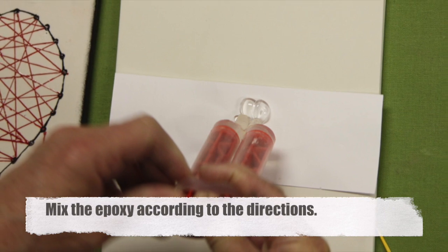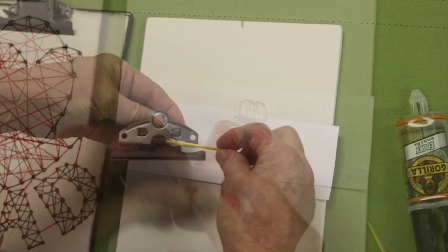Follow the directions on the back of the label of the two-part epoxy and mix the epoxy together using the toothpick.